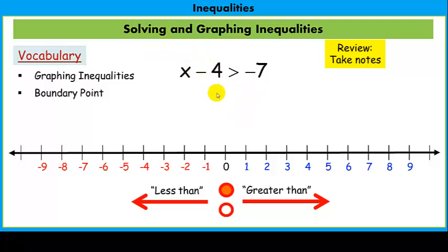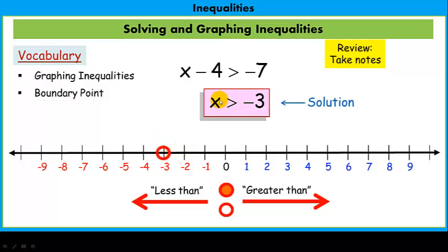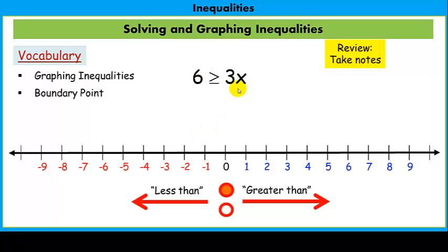When we're talking about solving inequalities, we solve them very similar to how we solve an equation — we want to get x alone. So I want to get rid of the 4. I add 4 to both sides, and what I get is x is greater than negative 3. This is considered the solution — I've isolated my variable, and x is greater than negative 3. This negative 3 is our boundary point, so we find negative 3 on the number line. In a quality like this, we're handling it exactly like an equation — I want to isolate x, so I divide both sides by a positive 3.